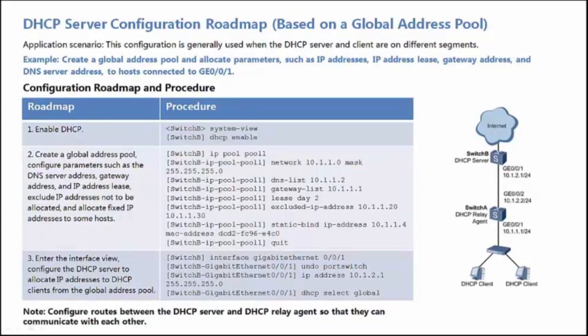Now let's see how to configure a DHCP Server based on a Global Address Pool. This configuration can be used when the DHCP Server and the DHCP Clients are on the same network segment or different network segments. This configuration is more complex than the configuration based on an Interface Address Pool.